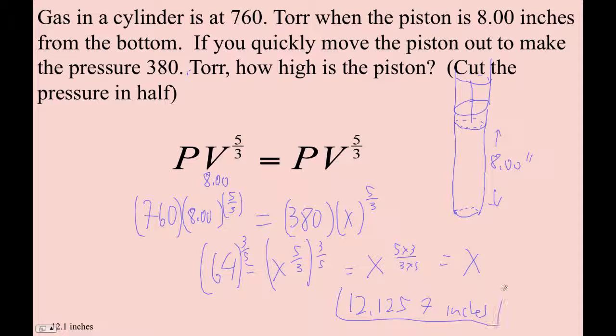Now, let's think about this. If this had been an isothermal process, that is, the moles didn't change and the temperature didn't change, then PV would have equaled PV. So to cut the pressure in half, you would simply double the volume. Double the volume, cut the pressure in half.